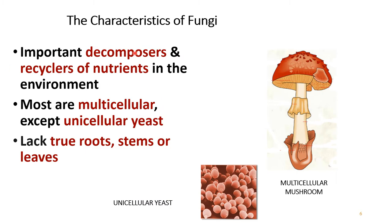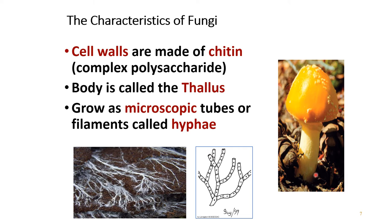Fungi are important decomposers and recyclers of nutrients in the environment. Most of them are multicellular, except the unicellular yeast. They lack true root, stem, and leaves. The cell wall of the fungus is made up of chitin, which is a complex polysaccharide. The body of the fungus is called the thallus.